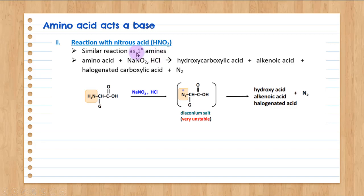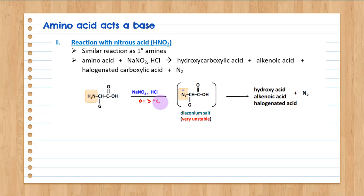For this amino acid under the presence of sodium nitrite and HCl (nitrous acid reagent), four products are formed: a hydroxy carboxylic acid, an alkenoic acid, a halogenated carboxylic acid, and nitrogen gas is released. Under the nitrous acid conditions (0–5°C), a diazonium salt intermediate forms, which is very unstable and breaks down to release nitrogen gas, creating a carbocation. From this carbocation, hydroxy carboxylic acid, alkenoic acid, and halogenated acid are produced.